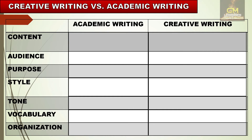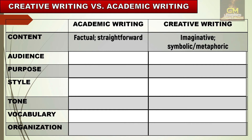Now, let's differentiate creative writing and academic writing. Academic writing is probably one of the most formal means of writing, whereas creative writing is the complete opposite — it doesn't follow any structure, guideline, or rule in terms of writing output. In terms of content, academic writing contents are factual and straightforward, while creative writing tends to be imaginative, symbolic, and metaphoric.